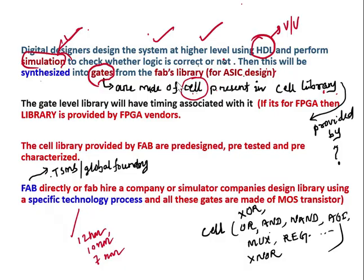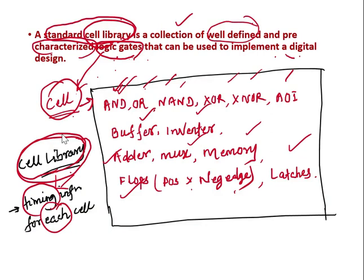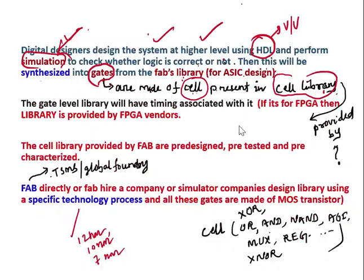During the synthesis process, the design is synthesized into gates — the basic components of cells from the foundry library. This cell library is provided either directly by the foundry — which can be TSMC, GlobalFoundries, IBM, Samsung, or any other foundry — or the foundry hires a company to develop the cell library.